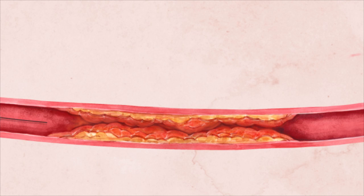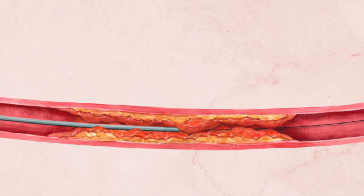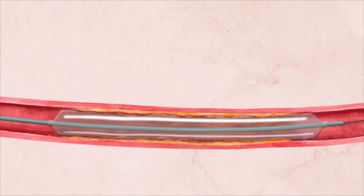The wire is then advanced to the area of blockage, and your doctor will cross the blockage with the wire and a catheter. Once the wire has successfully crossed the blockage, a deflated balloon is advanced over the wire to the site of the artery occlusion. When the balloon is inflated, it opens the blocked artery and restores blood flow.